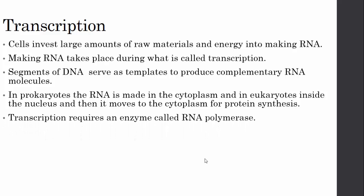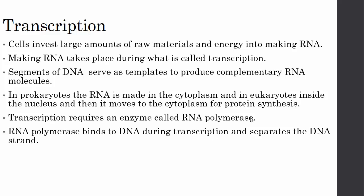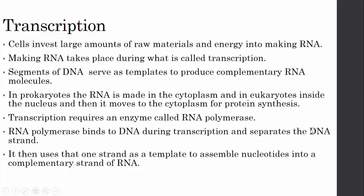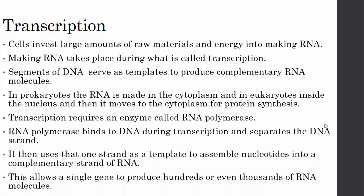Transcription requires an enzyme called RNA polymerase. RNA polymerase binds the DNA during transcription and separates the DNA strands. It then uses one strand as a template to assemble nucleotides into a complementary strand of RNA. This allows a single gene to produce hundreds or even thousands of RNA molecules. DNA has two strands in a double helix — RNA polymerase separates those strands and uses one as the template.